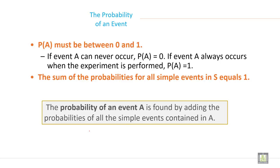The sum of the probabilities for all simple events in S equals 1. The probability of an event A is found by adding the probabilities of all the simple events contained in A.